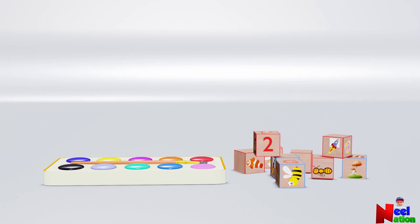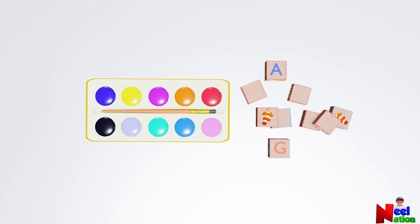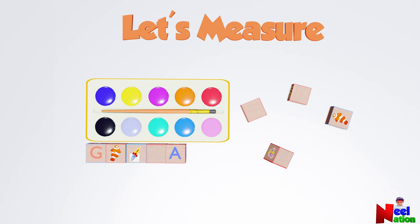Now let's measure the length of the watercolor box using these blocks. Let's place the blocks next to the watercolor box side by side until the blocks reaches the same length. How long is it? The color palette box is seven blocks long.